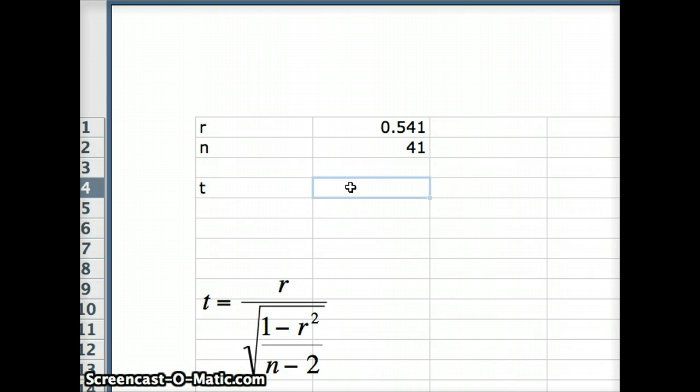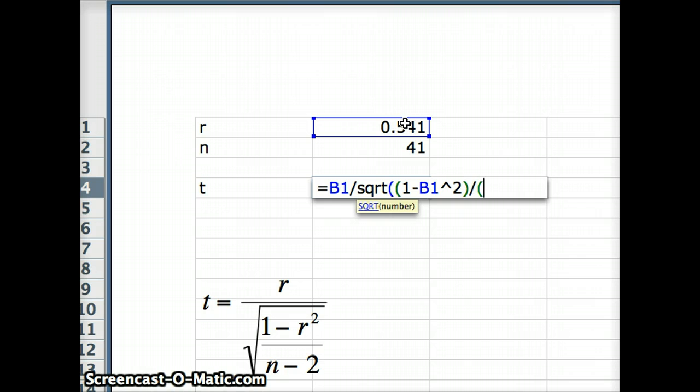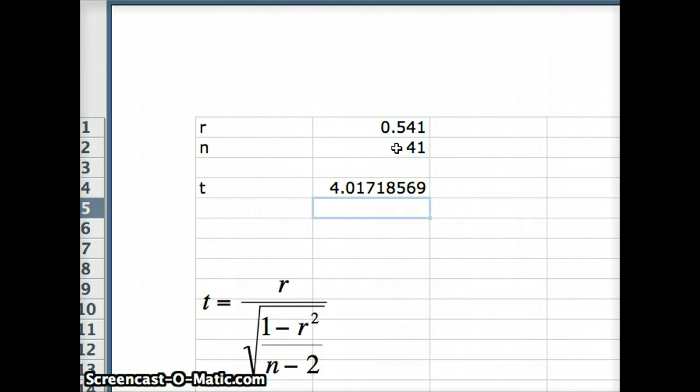So I've got my formula there. T is going to equal R divided by the square root of 1 minus R squared divided by N minus 2. And what do we get? We get 4.017. So our T value in this situation is 4.017.